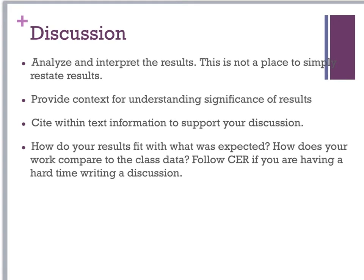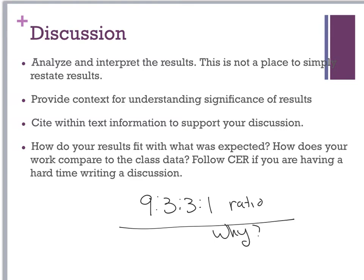For example, if you get a 9-to-3-to-3-to-1 ratio, what does that mean and why did you get that? We can talk about Mendel and Mendel's laws, the pattern of inheritance, and go into some background information. You will need to cite material, and anything you cite needs to have a works cited page. Please cite information and text to support your discussion.